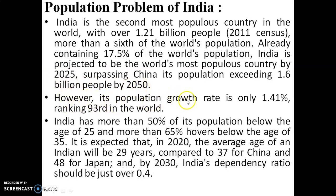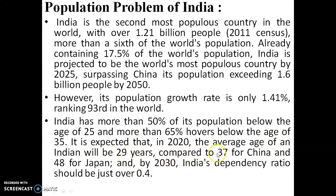However, India's population growth rate is only 1.41%, ranking 93rd in the world. India has more than 50% of its population below the age of 25 and more than 65% below the age of 35. It is expected that in 2020 the average age of an Indian will be 29 years, compared to 37 for China and 48 for Japan, and by 2030 India's dependency ratio should be just over 0.4%.